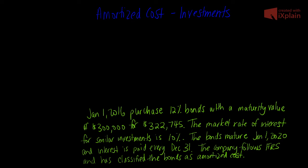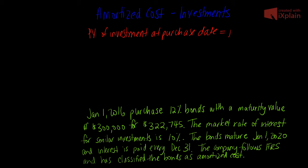Let's talk about the amortized cost model for investments. The amortized cost model is where we carry investments on our statement of financial position at amortized cost, which is the present value of the investment at the purchase date — which should also be the purchase price.